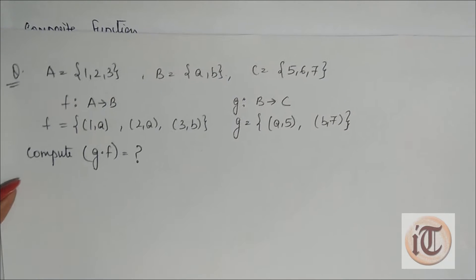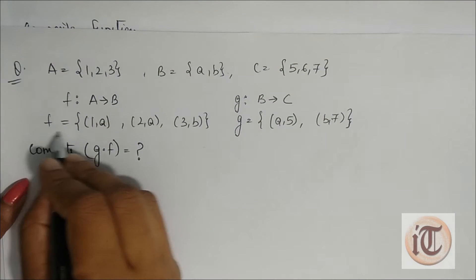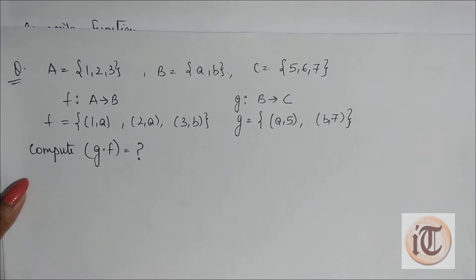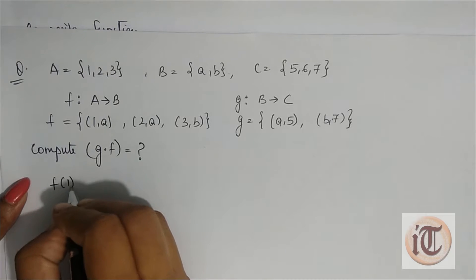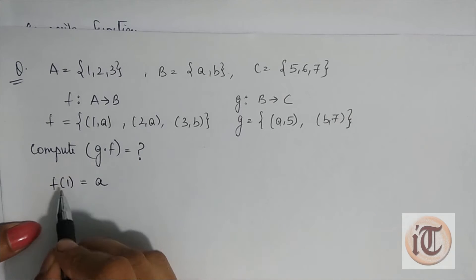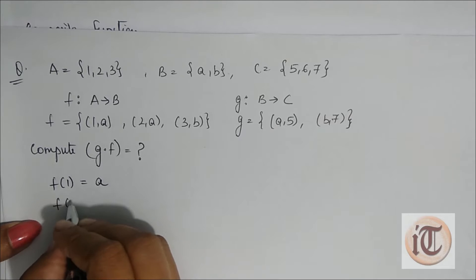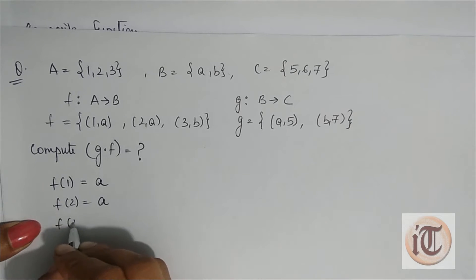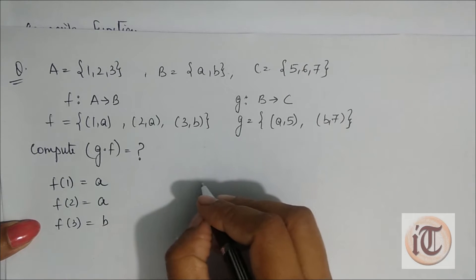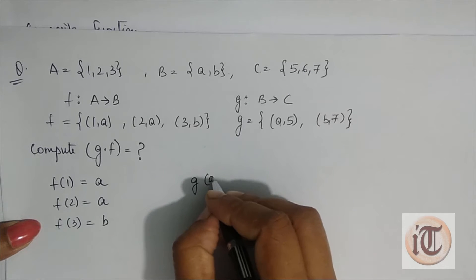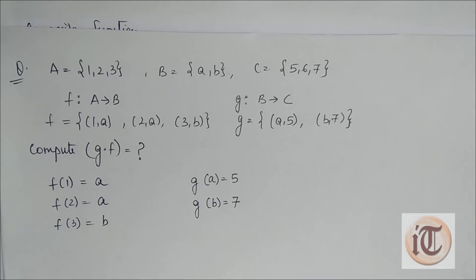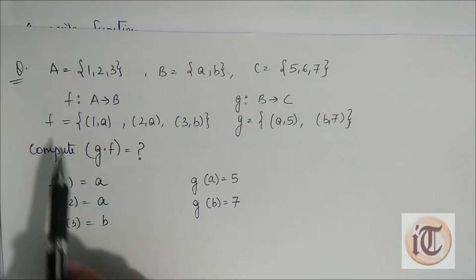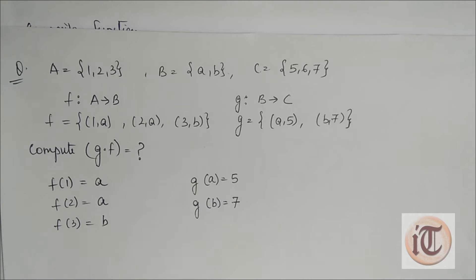For finding the composition g dot f, first with the help of f, we calculate all the values of f. So f(1) = a, f(2) = a, f(3) = b. Similarly for g, g(a) = 5 and g(b) = 7. With the help of this f set and g set, we can calculate all the function values of f and g.